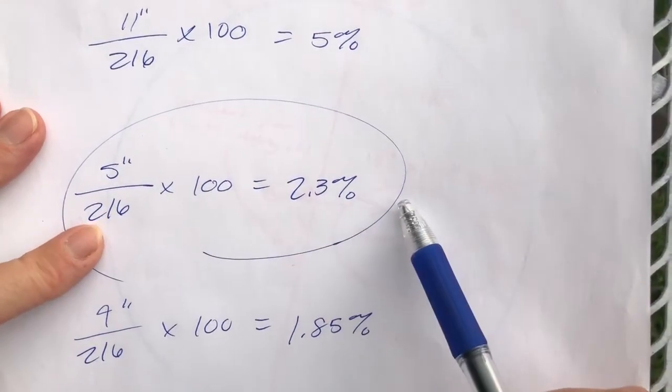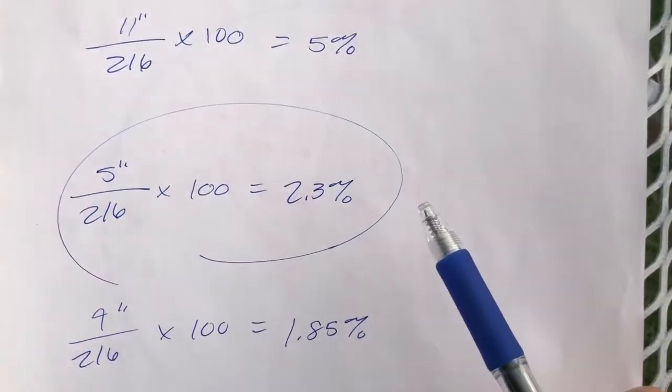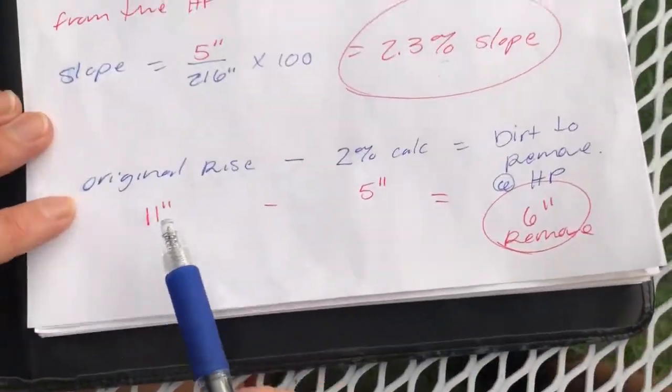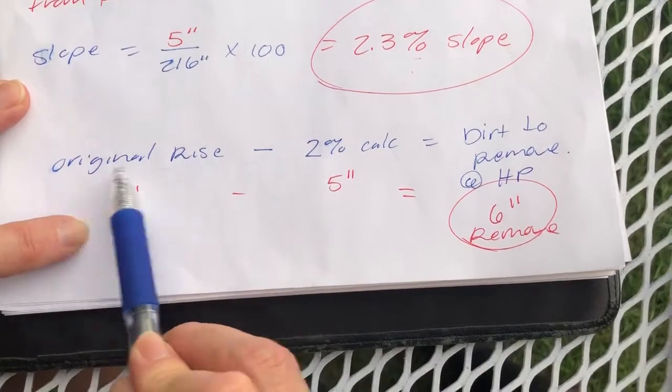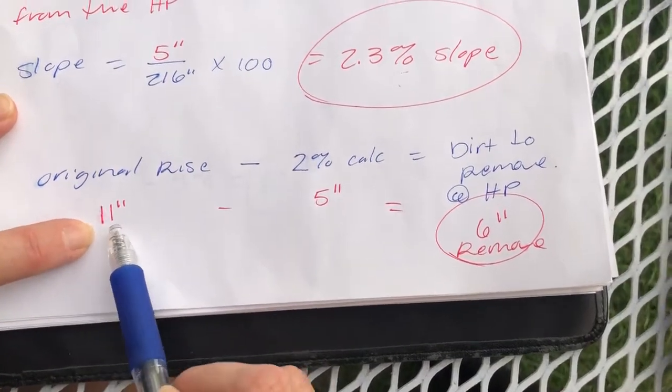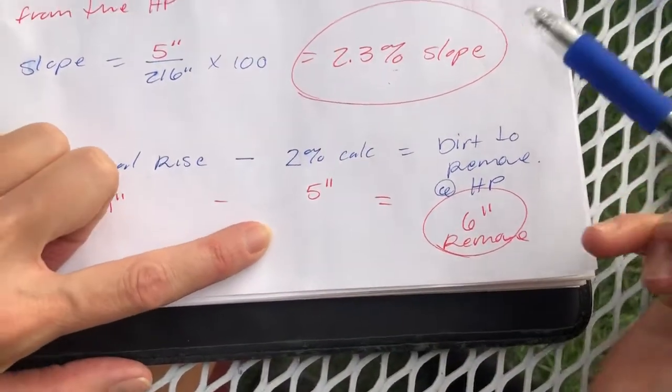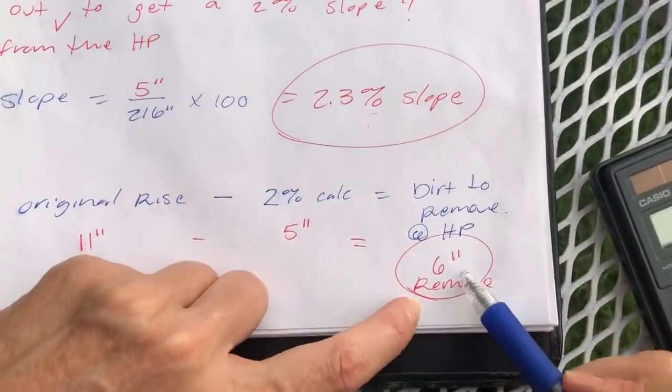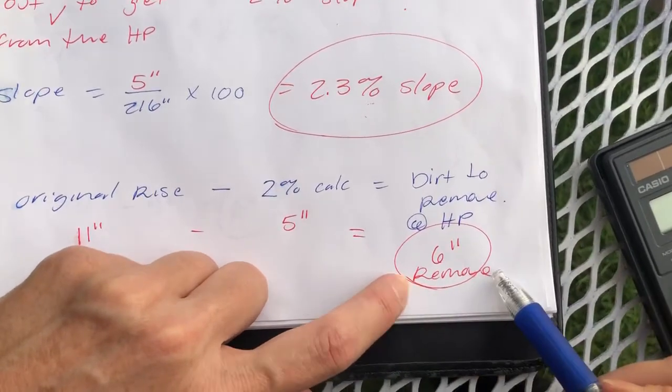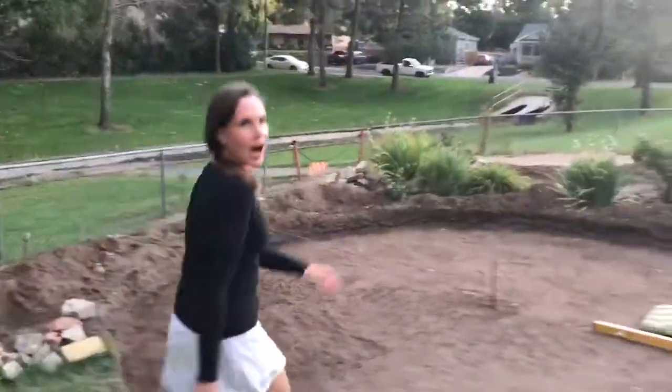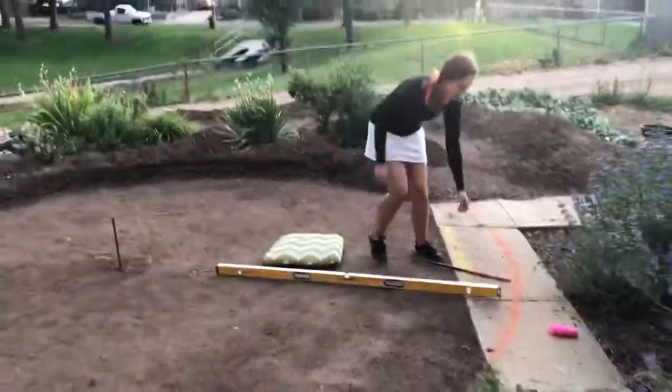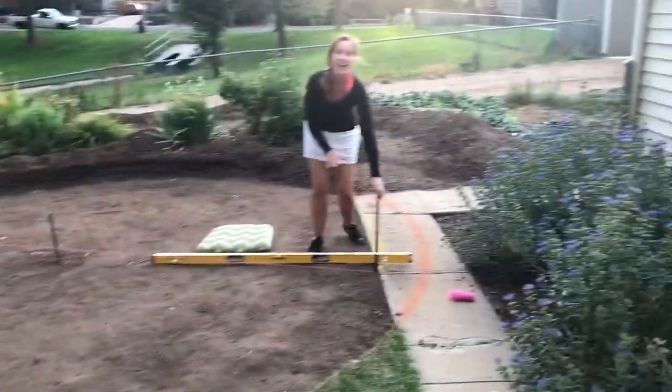So now, if you go to the bottom of the page, what we're going to do is take our original rise of 11 inches minus our 2% calculation, which is 5 inches, and we get 6 inches that needs to be removed from the high point. So I need to remove 5 inches of dirt from the high side of my installation and zero inches from the low side.